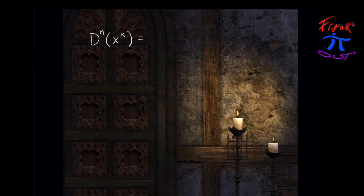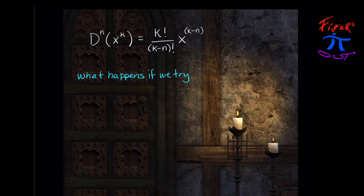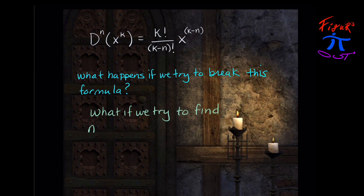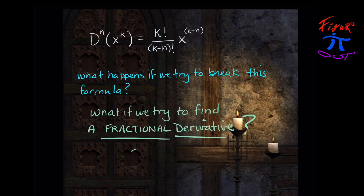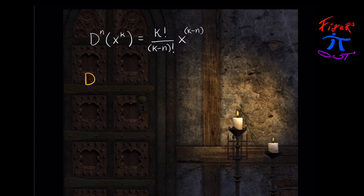Recall that the n-th derivative of x to the k power is k-factorial over (k−n)-factorial times x to the (k−n) power. Let's try to break this formula just a little bit — in other words, let's try to find a fractional derivative. We need to let n equal a fraction and see what happens. Let's let n equal one-half and explore what the half derivative of x squared will be.